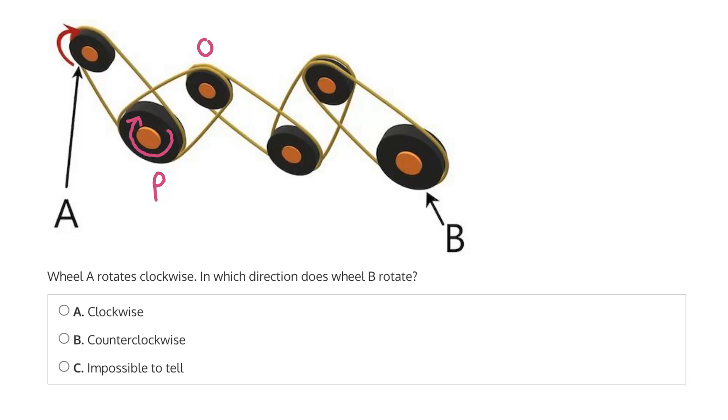So we can label these other wheels Q, R, and S. And again, we see the same thing. This time, P is the driving wheel, and Q is the driven wheel. And if P is rotating clockwise, and they're connected by a belt with no twists, well, then Q will also rotate clockwise, and so on and so forth.